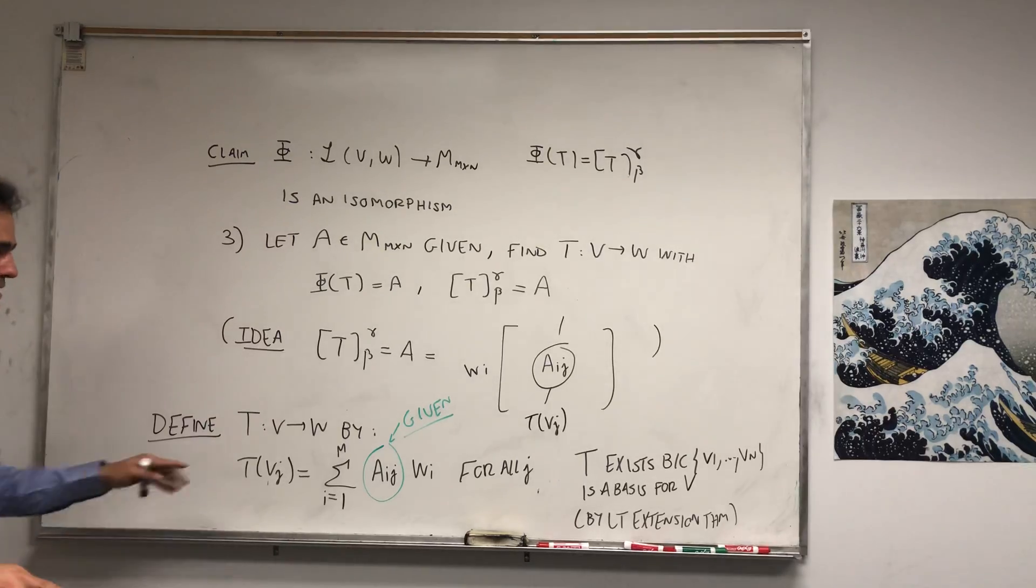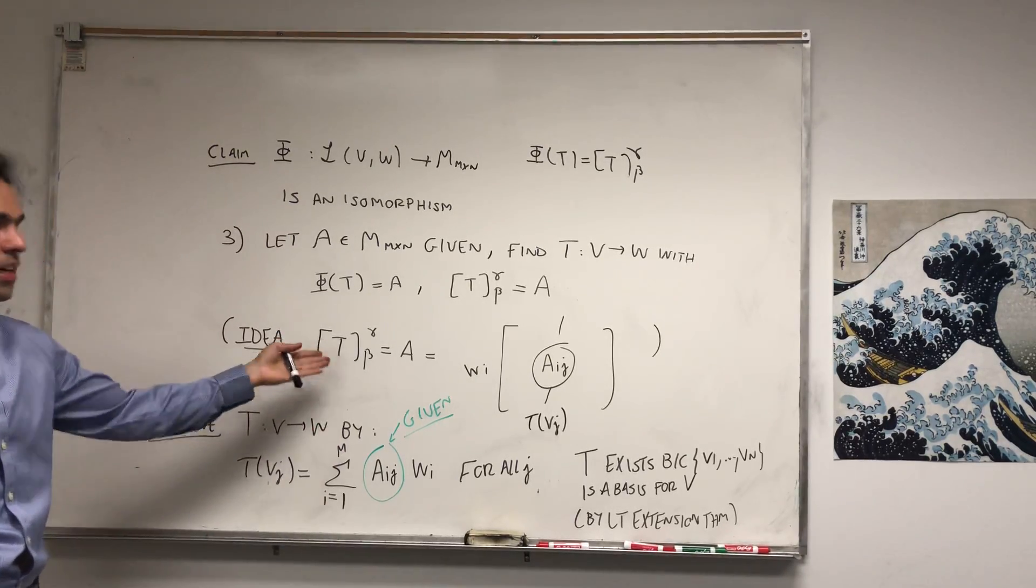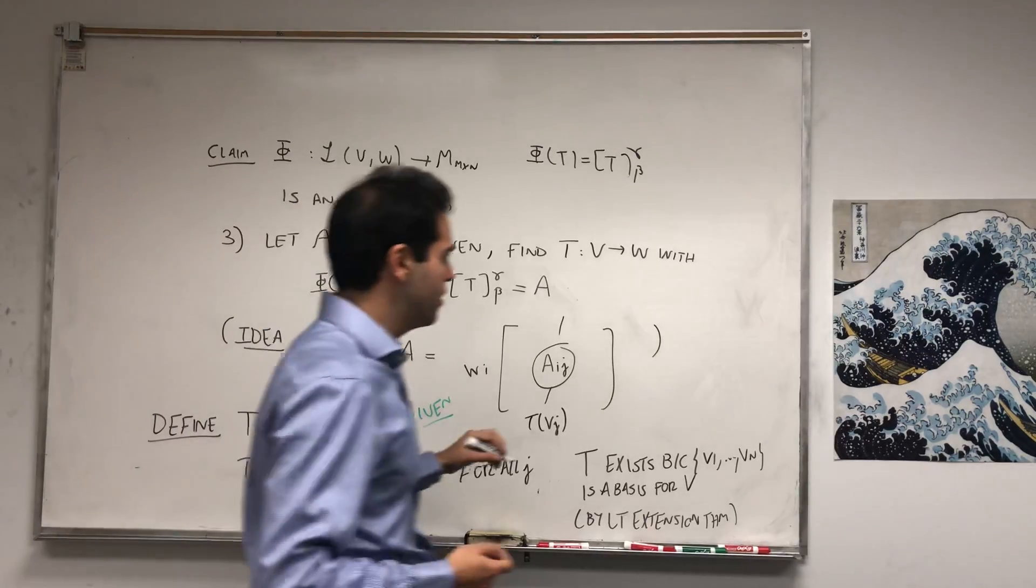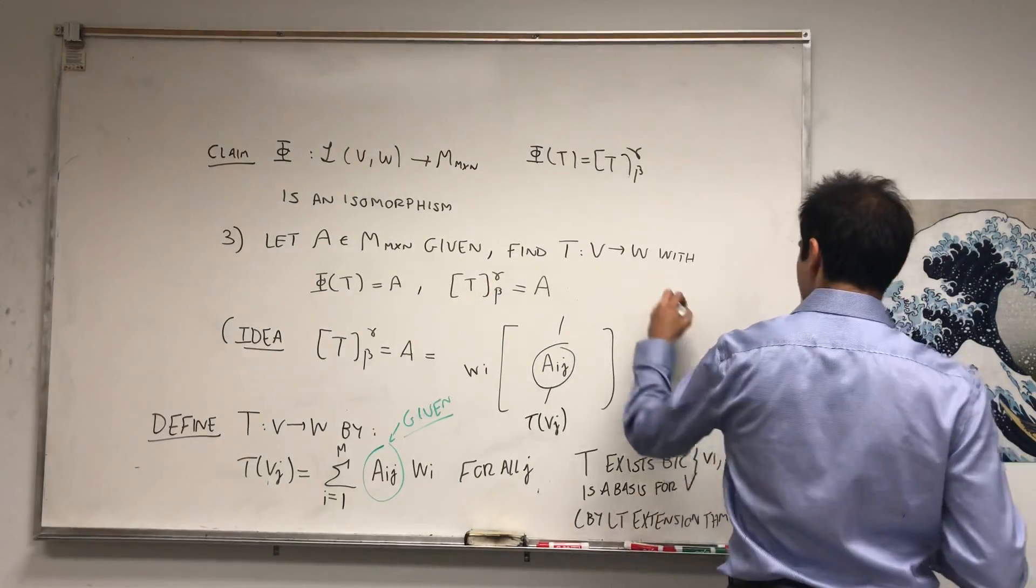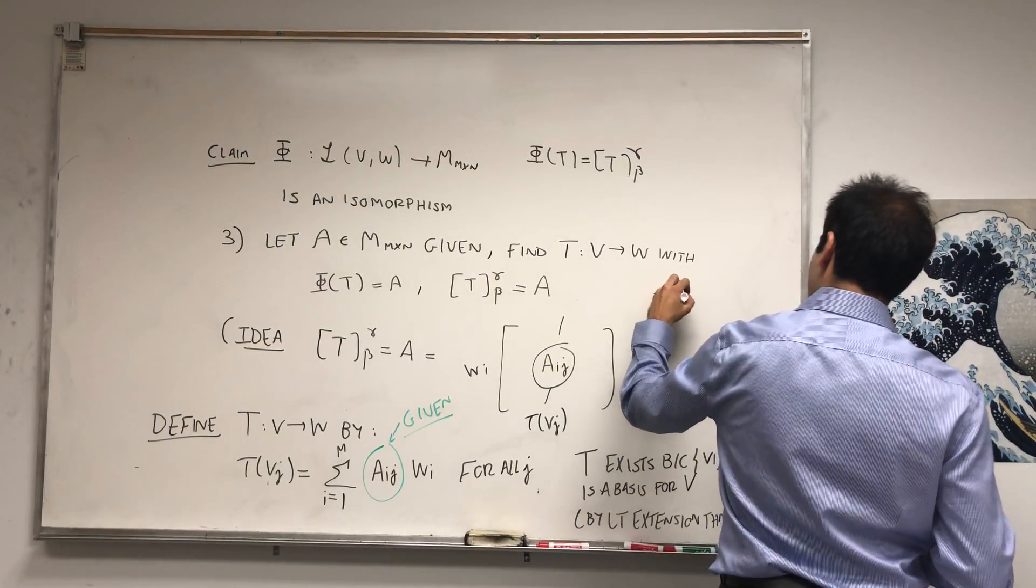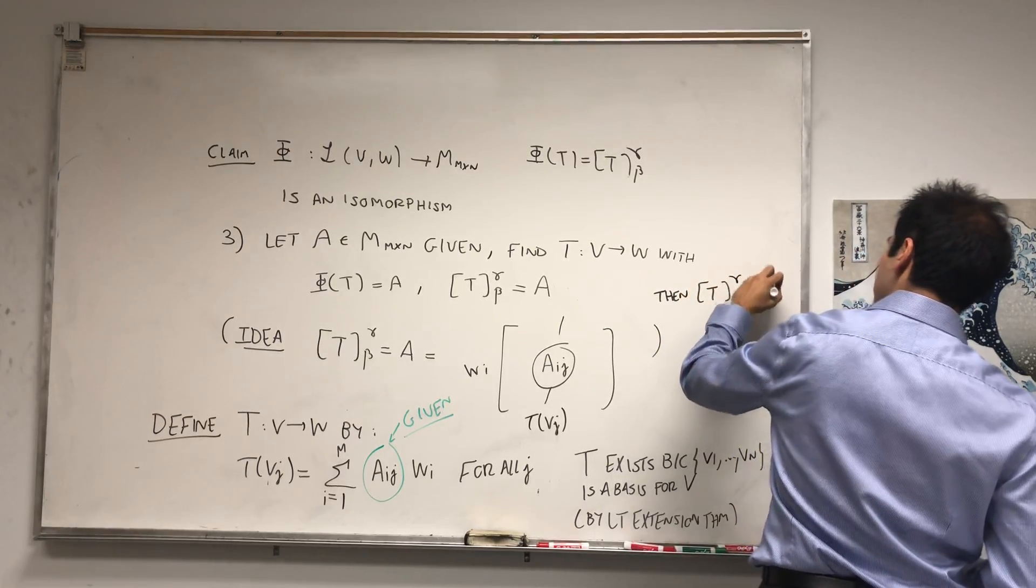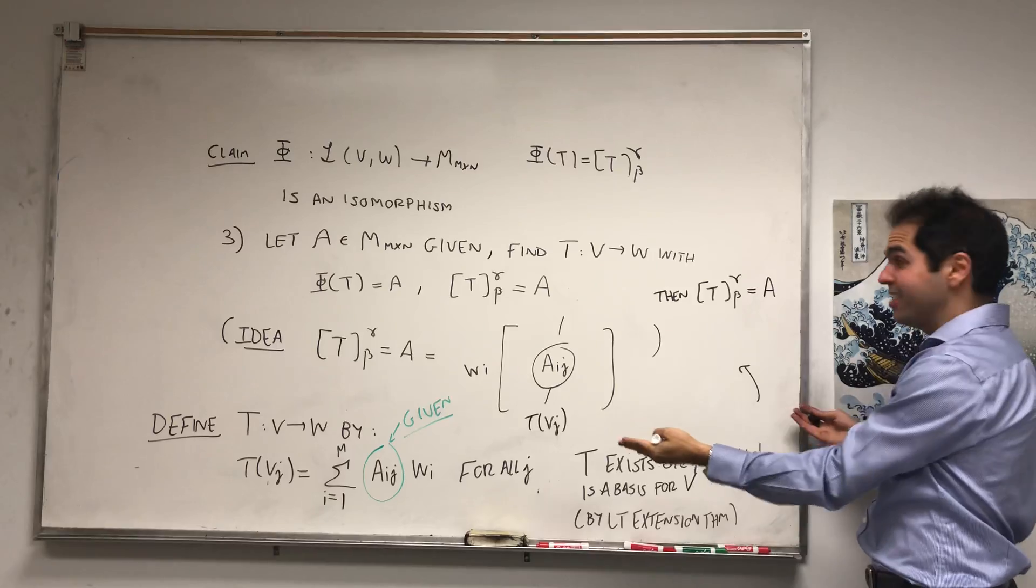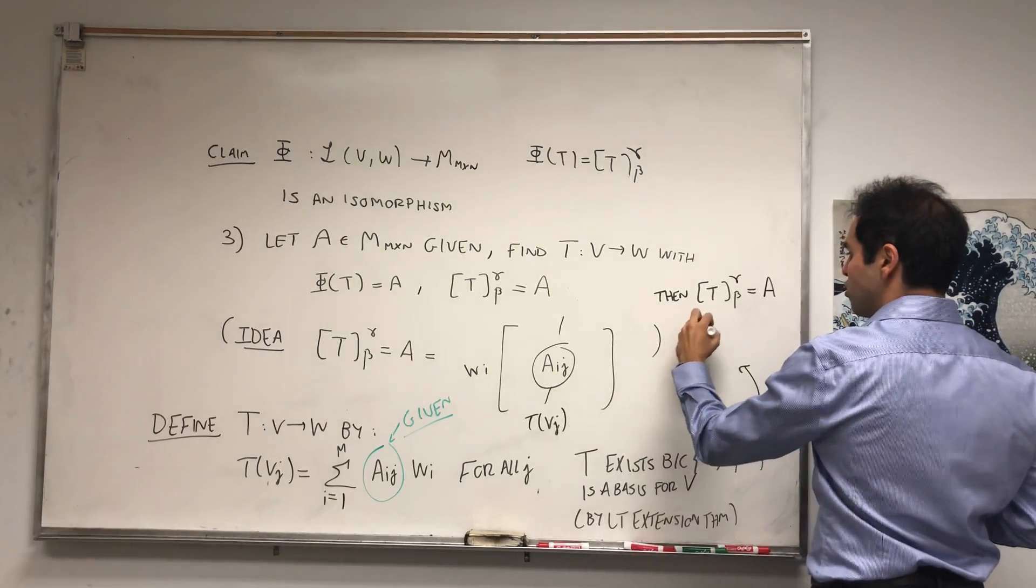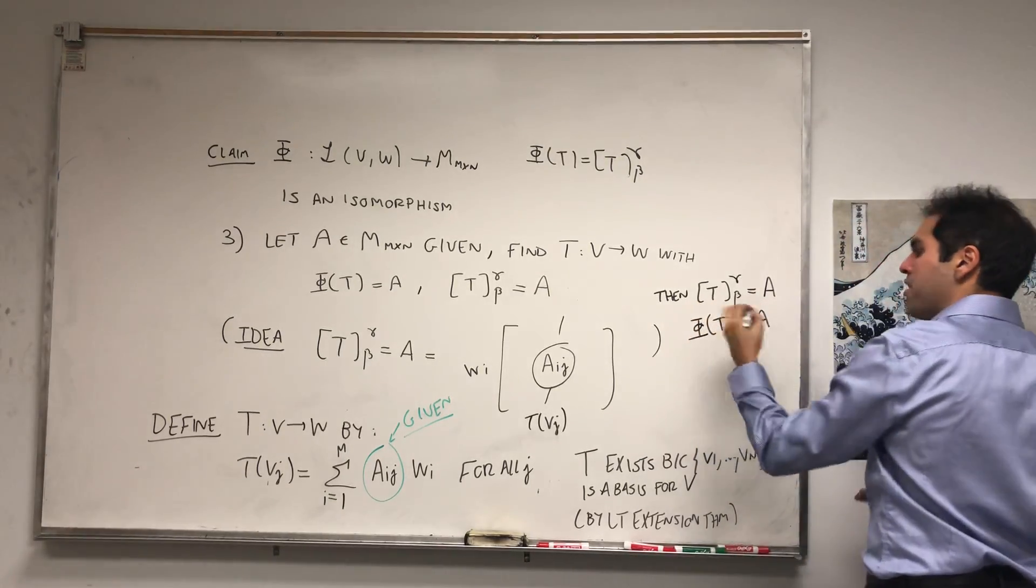And the nice thing is then we're done, because look, what is then the matrix of T? It's precisely A. So then [T]_beta^gamma equals A by construction. So but this is just phi(T), so phi(T) equals to A.